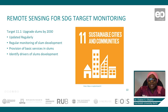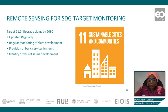Remote sensing data can support achieving the SDG target 11.1 because, firstly, it is updated regularly — through that, we can monitor slum development and create an up-to-date database on slum development, which can serve as a basis for intervention at different time periods. Furthermore, it can help us to identify the drivers of slum development.